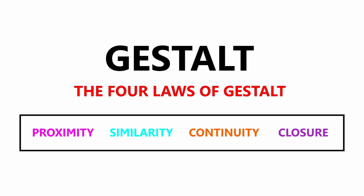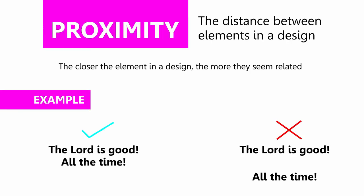This is a good example of unity in a design. Let's see the theory of gestalt. Here we have the four laws of gestalt which is proximity, similarity, continuity, and closure. Proximity is the distance between elements in a design. The closer the elements, the more they seem related.